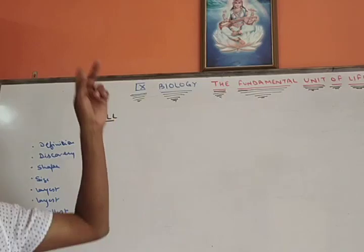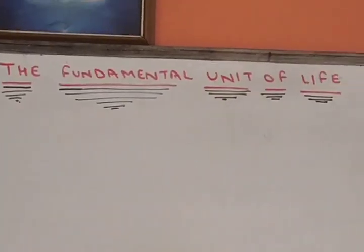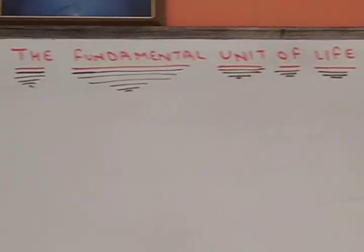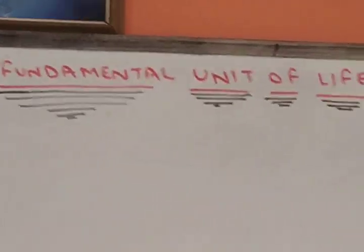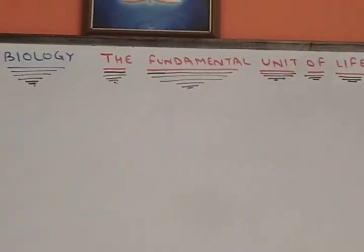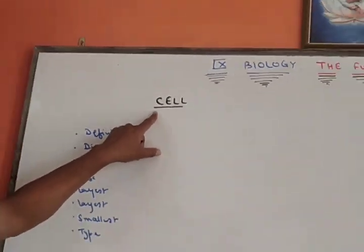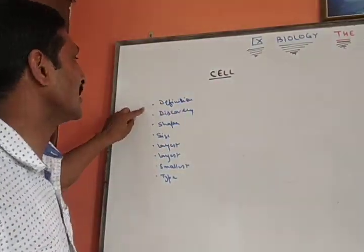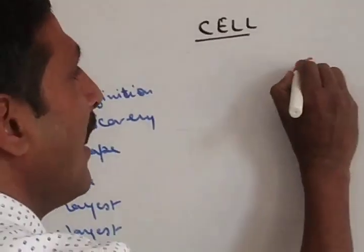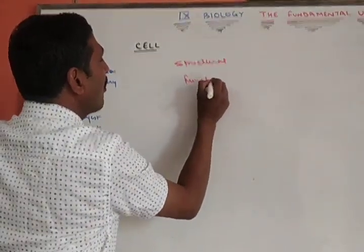Students, as this building is made up of small repeating units called as brick, similarly our body is made up of extremely small structures called as cells. So, cell is the structural and functional unit of all living organisms.